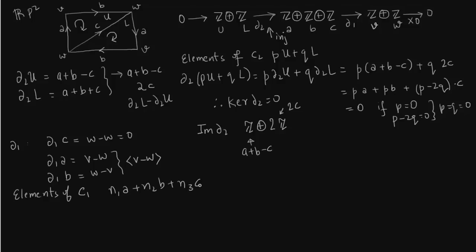We want to talk about kernel. Elements of C1 look like N1 A, N2 B, N3 C where N1, N2, N3 are integers. Delta 1C is generated by the following map. We get N1 minus N2 times V minus W, so basically from A plus B. This will be 0 if N1 equals N2. You could choose any value for N3. So this N3 itself will generate integers. N1 equal to N2, this is just a single degree of freedom.